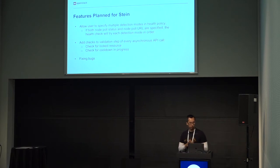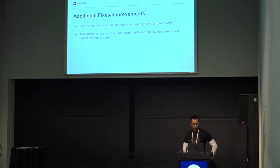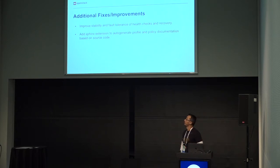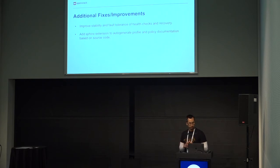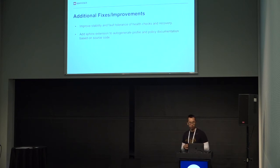We are looking to fix any outstanding bugs. We're also working on improving the stability and fault tolerance of health checks to handle errors such as when Nova is unreachable or the network is down. Additionally, we're looking to add a Sphinx extension to auto-generate profile and policy documentation based on source code, so the documentation stays up to date with all changes.